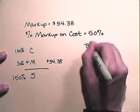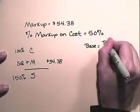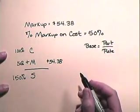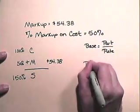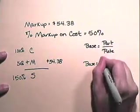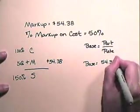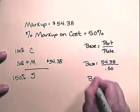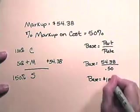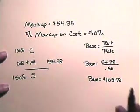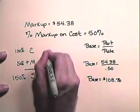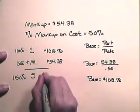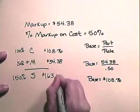We know that base equals part divided by rate. The part here is the markup. The rate is the markup percent. So the base will be $54.38 divided by 50%. So the base will be $108.76. So the base is the cost. So the cost is $108.76, and the selling price is $163.14.